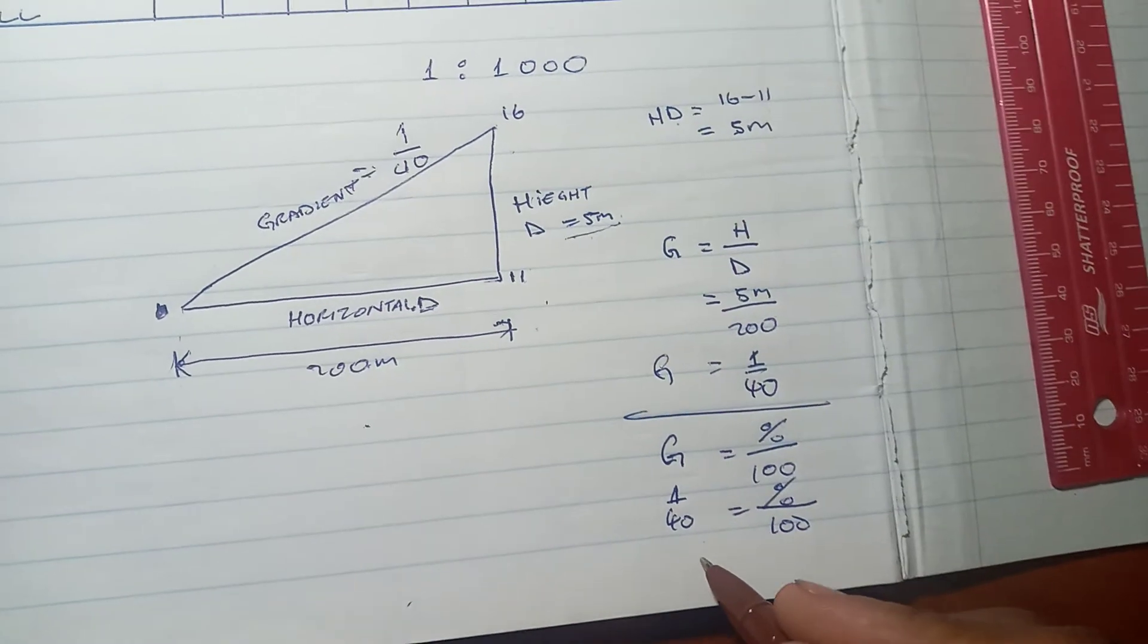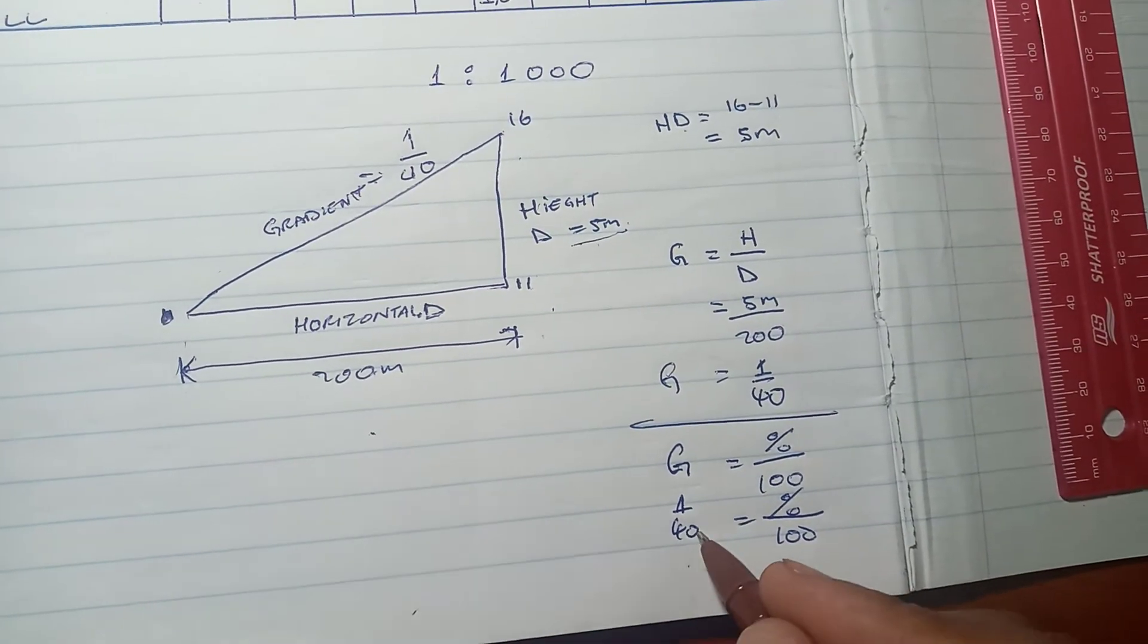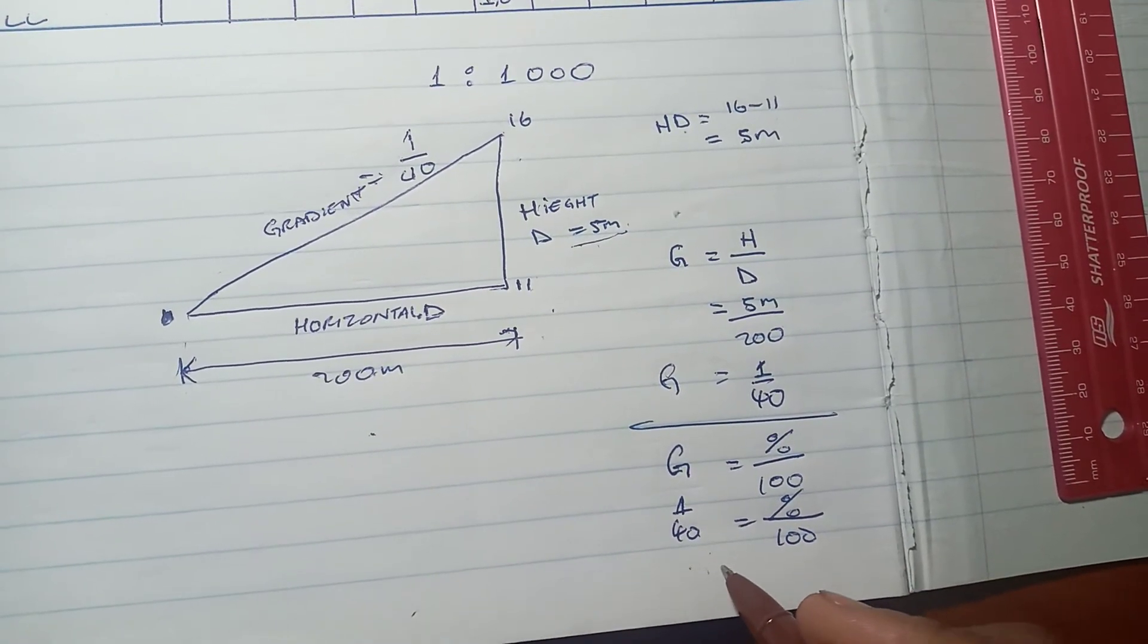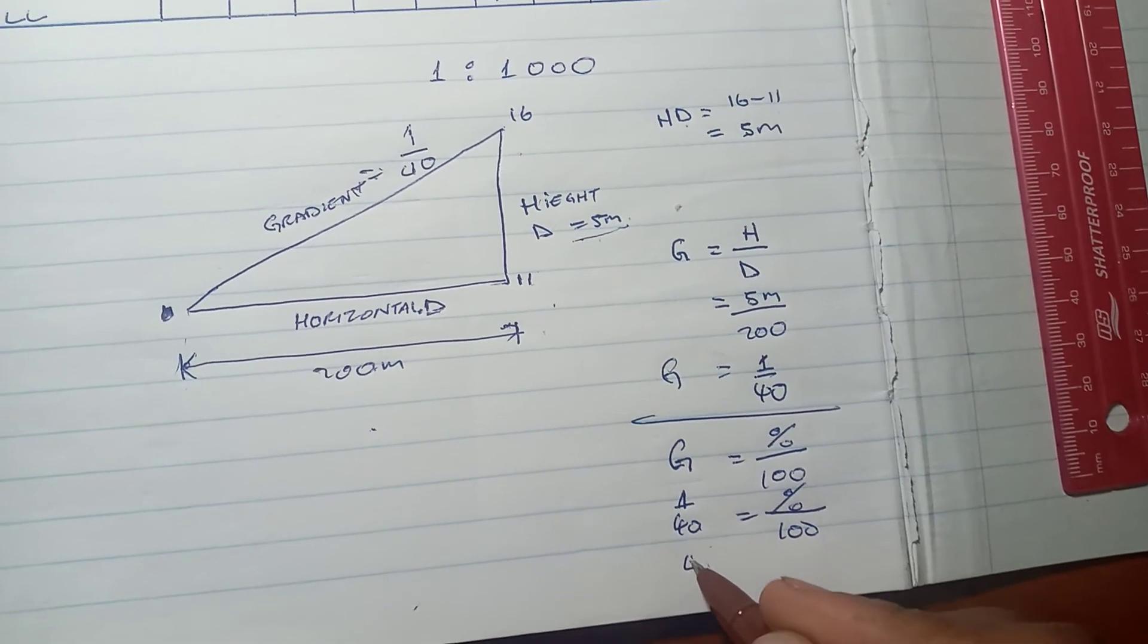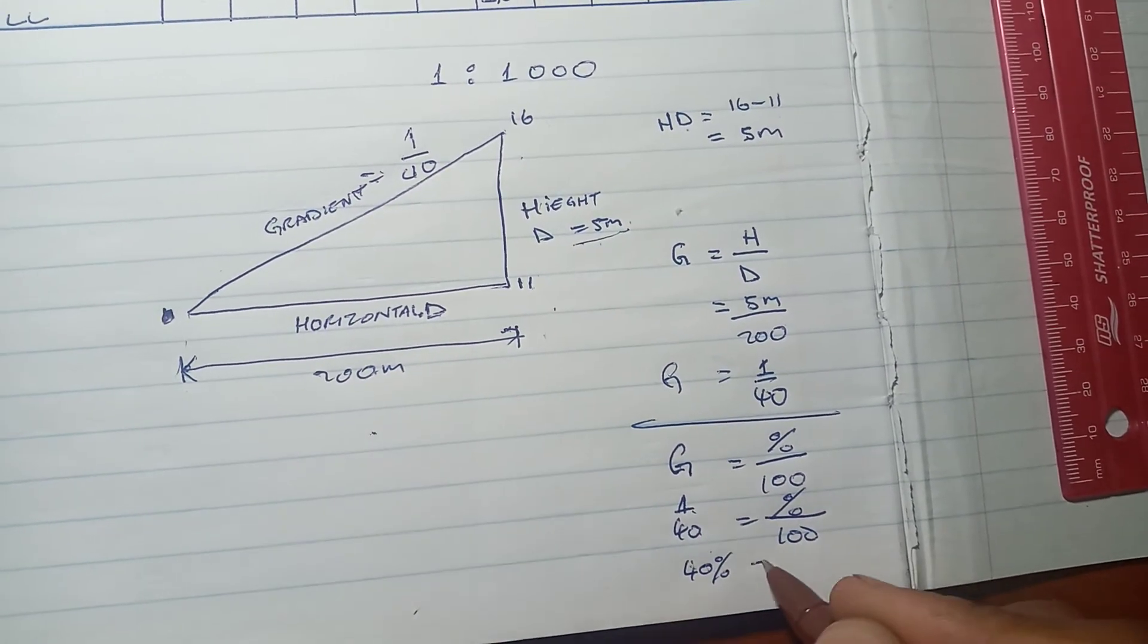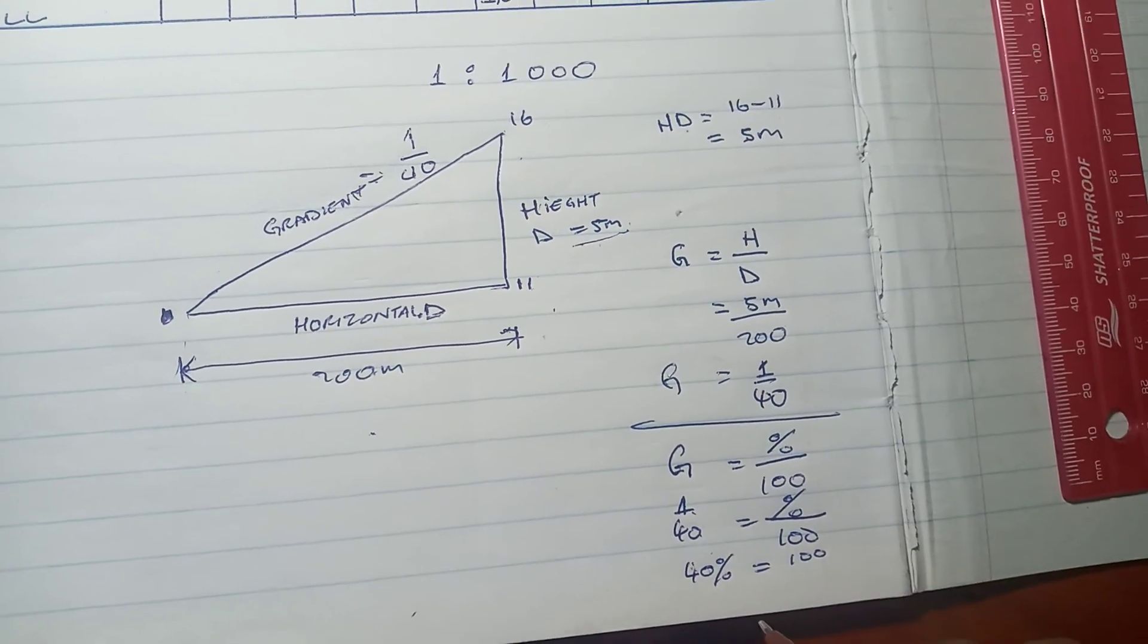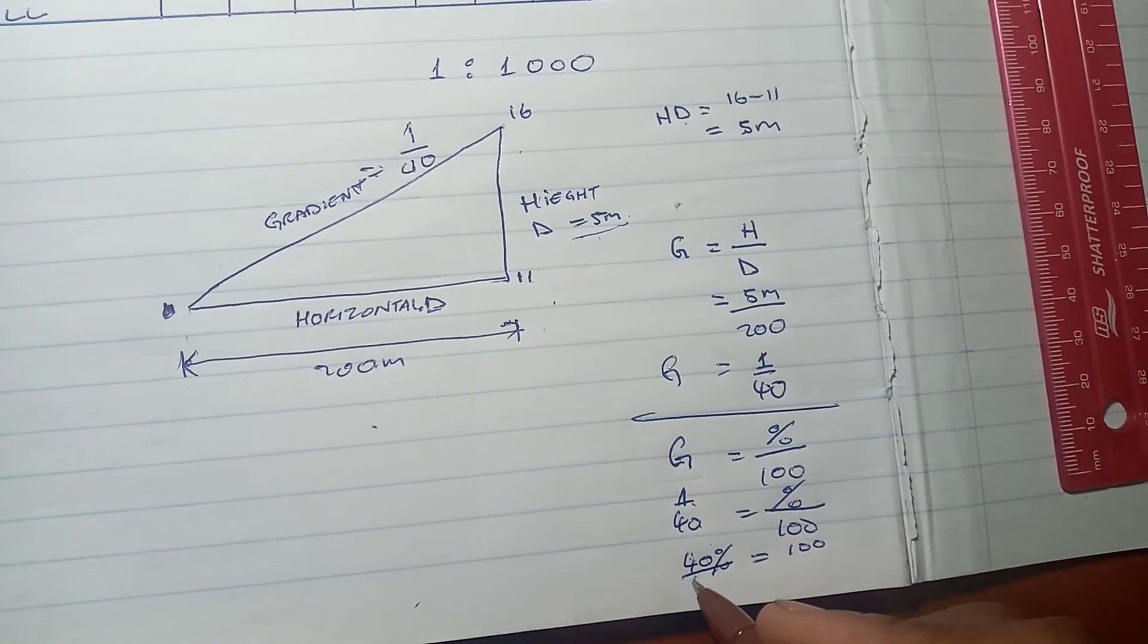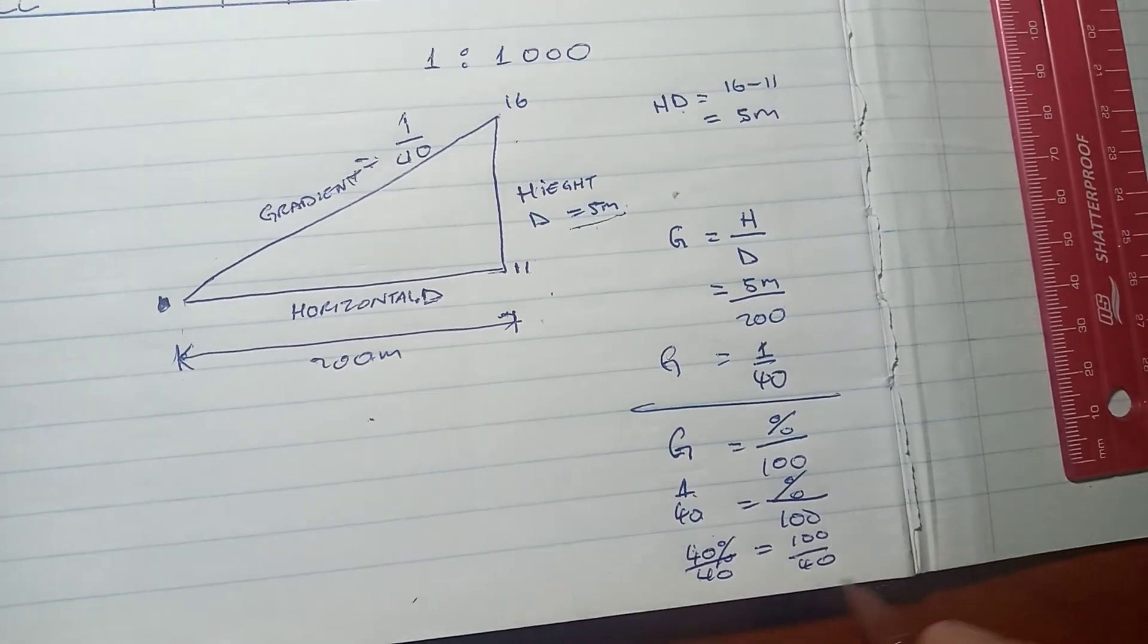So 1/40 times 100 equals 100 divided by 40, which equals 2.5 percent.